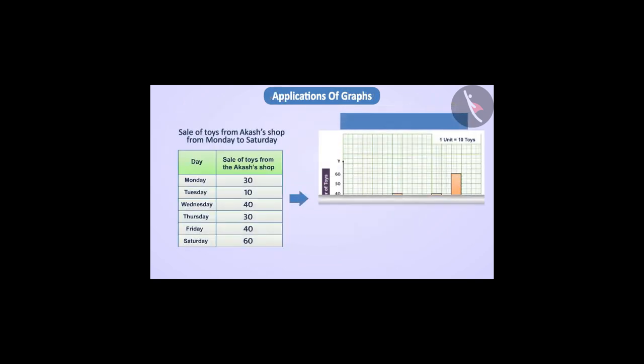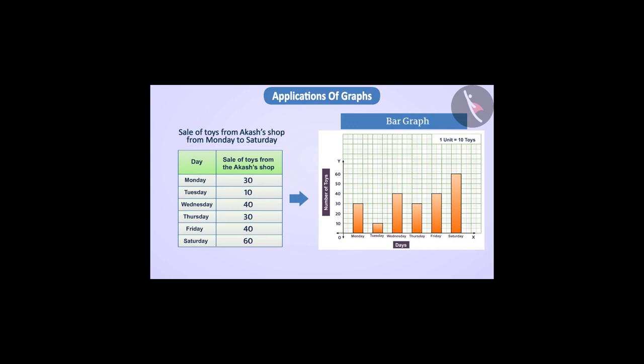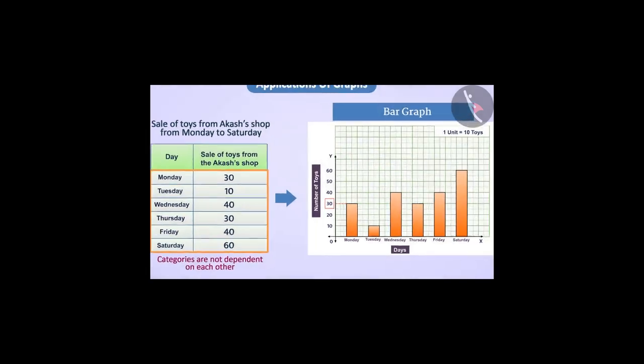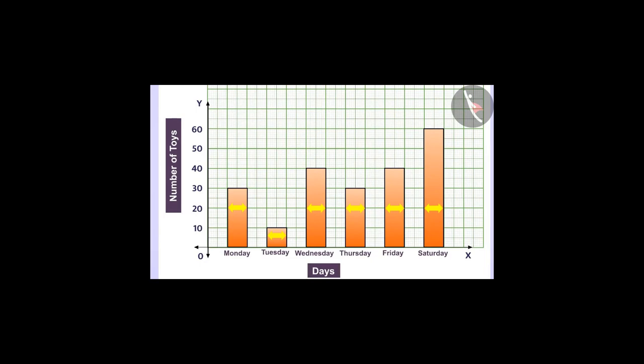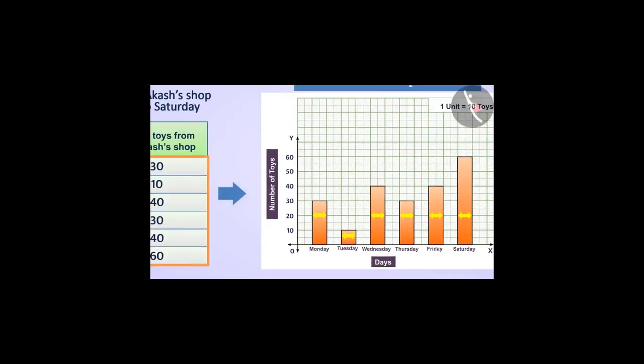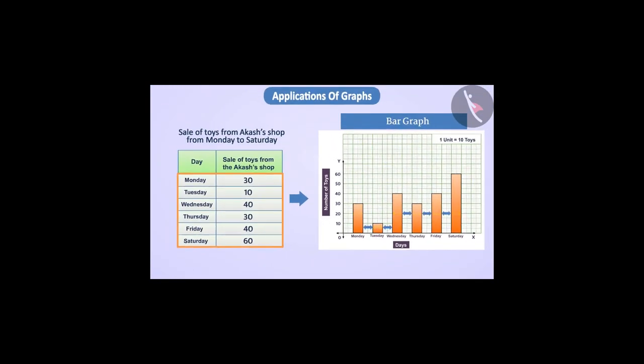A bar graph is used to compare different categories between cases when the categories are not dependent on each other. The amount of each category in the bar graph is represented by the length of the bar. Bars of equal width are made in it and equal distance is kept between the two consecutive bars.